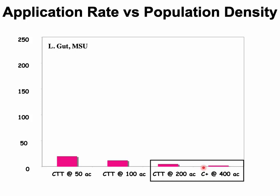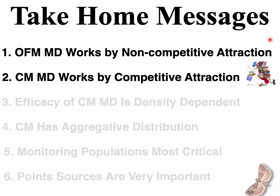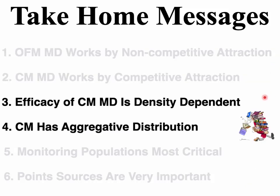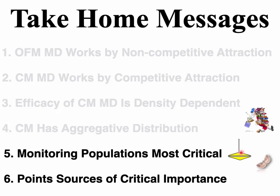At low population density, 200 C+ would work as well as 200 CTT at half the price of 400 dispensers per acre. As a result, Biocontrol registered CMFlex, which goes out at 200 to 400 dispensers per acre based on this data. The take-home messages: OFM mating disruption works by non-competitive attraction; codling moth mating disruption works by competitive attraction; efficacy of mating disruption is density dependent; codling moth has an aggregative distribution with hotspots; monitoring with pheromone traps and visual inspections is the most critical thing you can do; and point source application is critically important relative to population density.